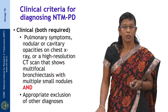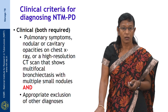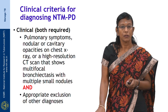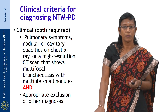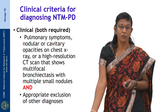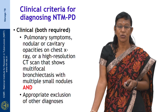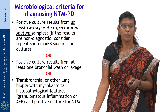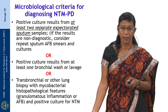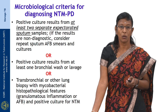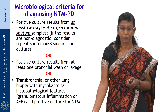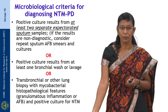What are the clinical criteria for diagnosing NTM pulmonary disease? Per the ATS and British Thoracic Society guidelines, all clinical criteria must be positive: pulmonary symptoms plus chest X-ray showing nodular or cavitary opacities, and CT scan showing multifocal bronchiectasis with multiple small nodules, plus exclusion of other diagnoses. For microbiological criteria — which are alternate — you need positive culture from at least two separate expectorated sputum samples, or one positive culture from bronchial wash or lavage, or a transbronchial or other lung biopsy with mycobacterial histopathological features and positive NTM culture.